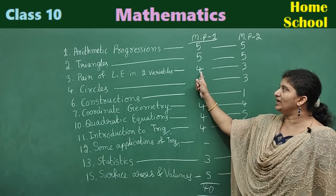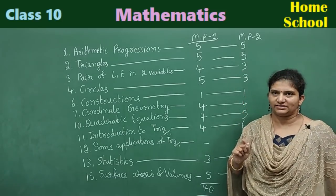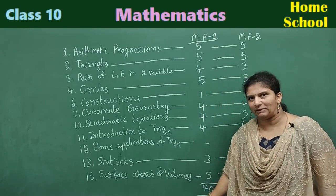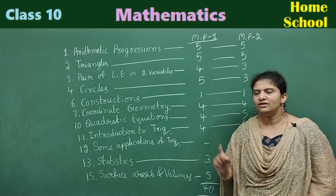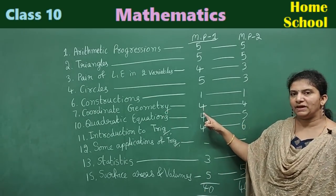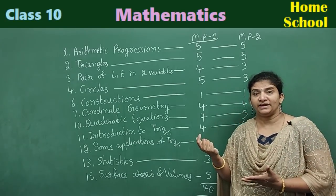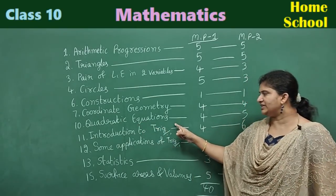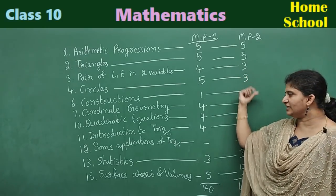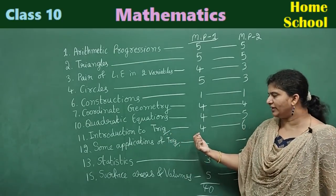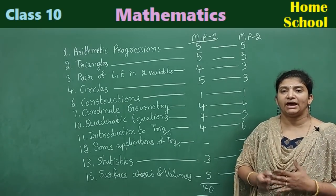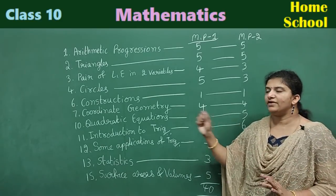Pair of Linear Equations is varying — first paper four, second paper only three asked. Circles: first paper five questions, second paper three. Constructions is a chapter where we get very less MCQs — only one MCQ we can expect. Coordinate Geometry: first paper four, second paper also four, though we may expect one more or less. Quadratic Equations: first paper four, second paper one question increased. Introduction to Trigonometry: four in the first paper, and in the second paper they gave more preference — six multiple choice questions from this chapter.